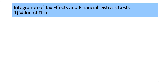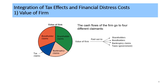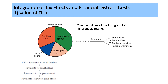We shall first discuss the impact of tax effects and financial distress costs on the value of the firm. When the cost of financial distress is considered from the PI approach, the cash flows of the firm go to four different claimants: first, shareholders; second, bondholders; third, the government in the form of taxes; and fourth, lawyers during the bankruptcy process. The value of the firm VT equals the sum of these four components — S (equity), B (bonds), G (government claims), and L (value received by lawyers under financial distress).